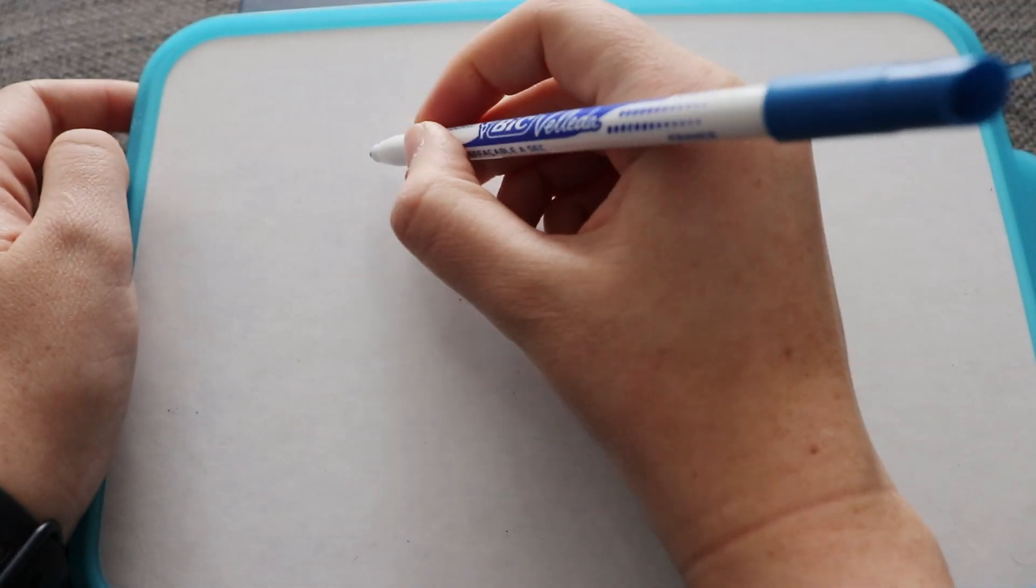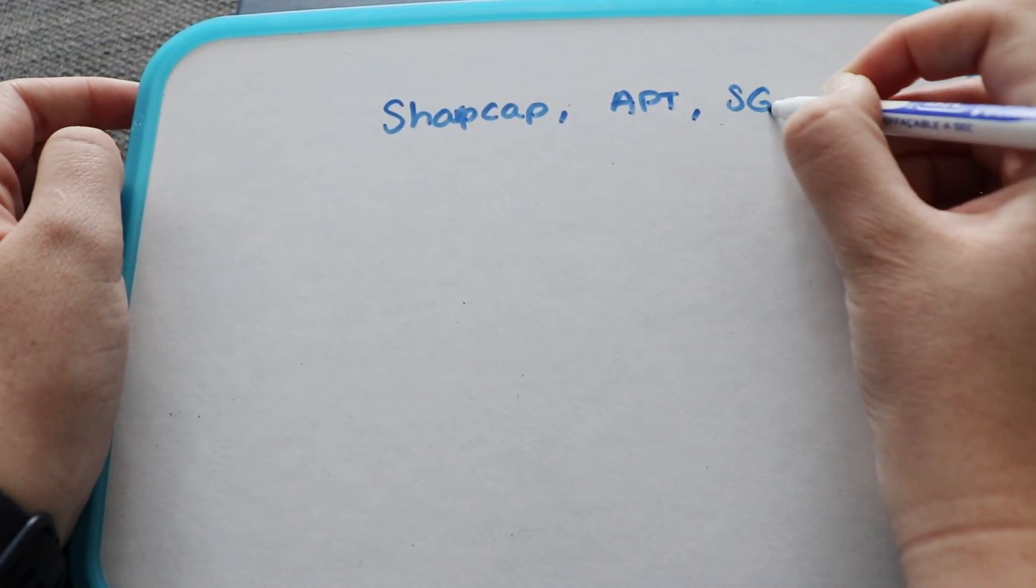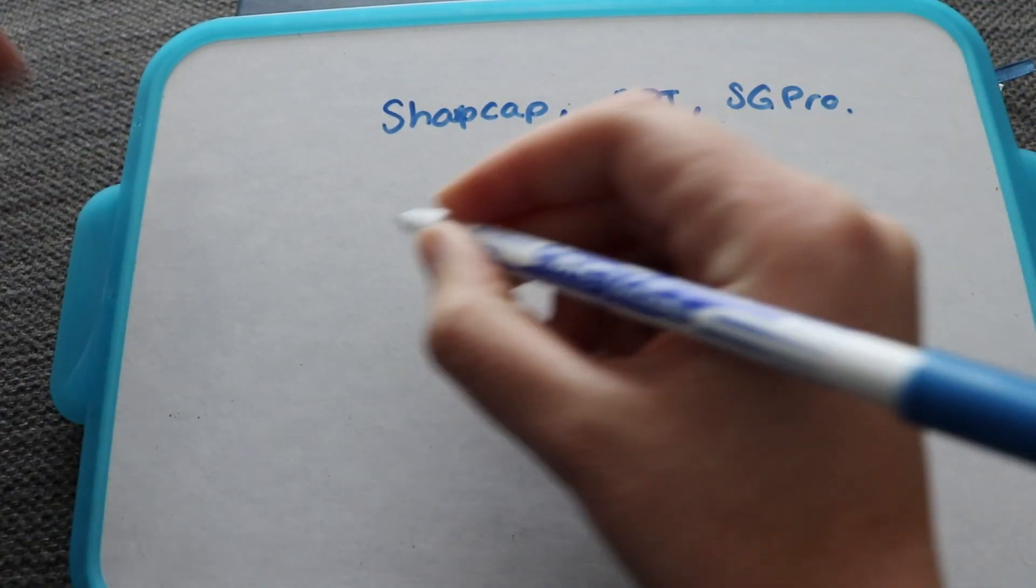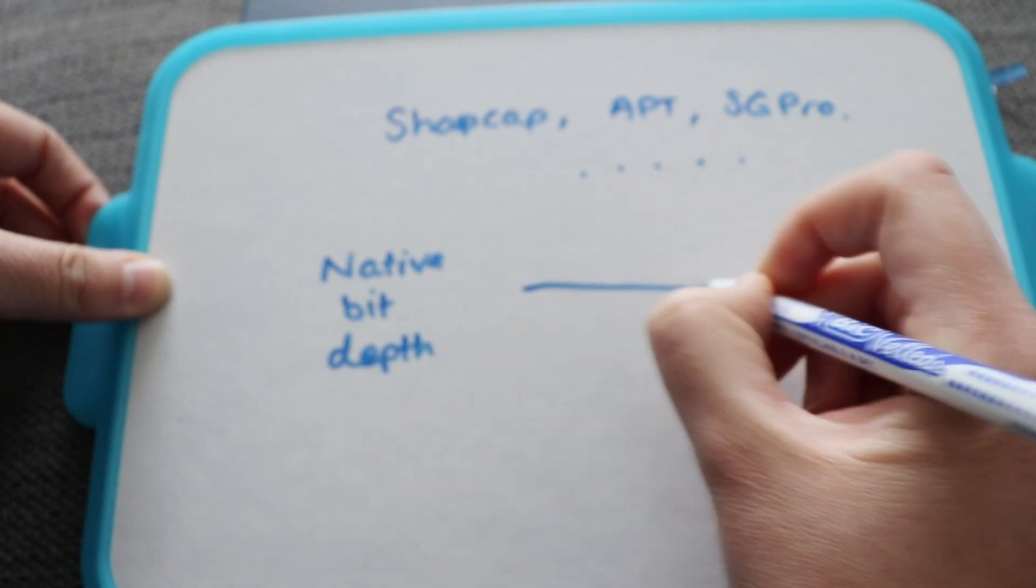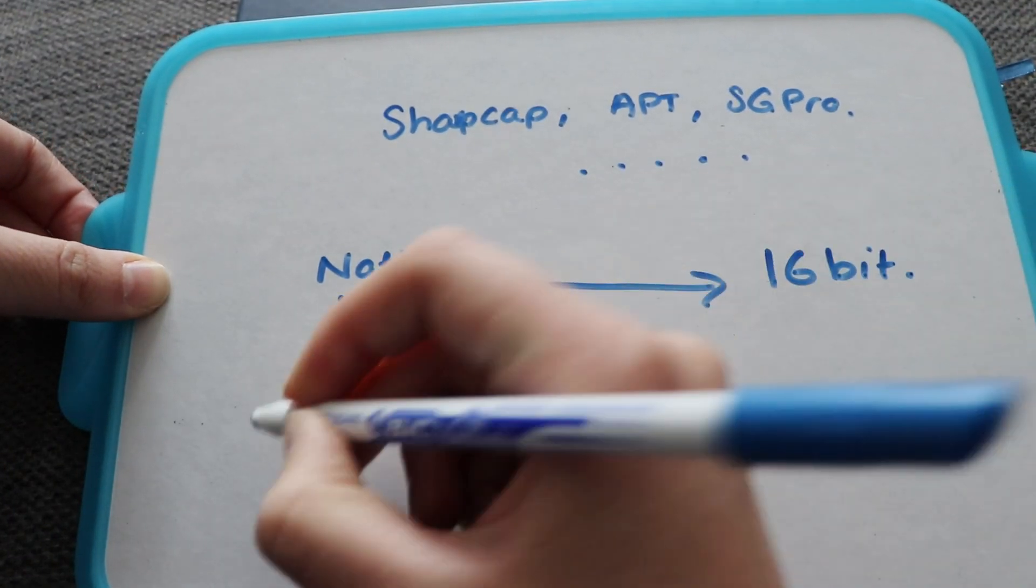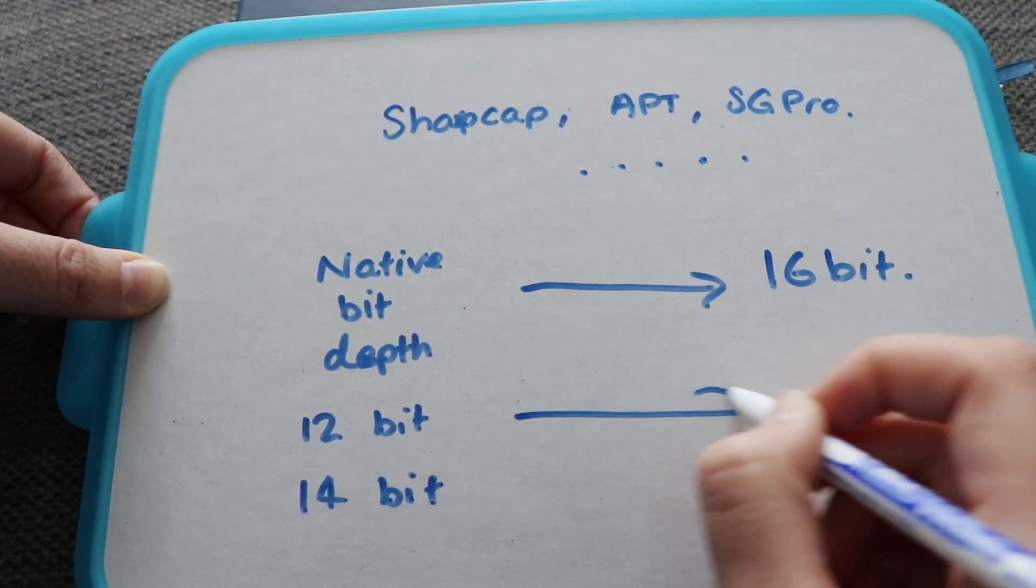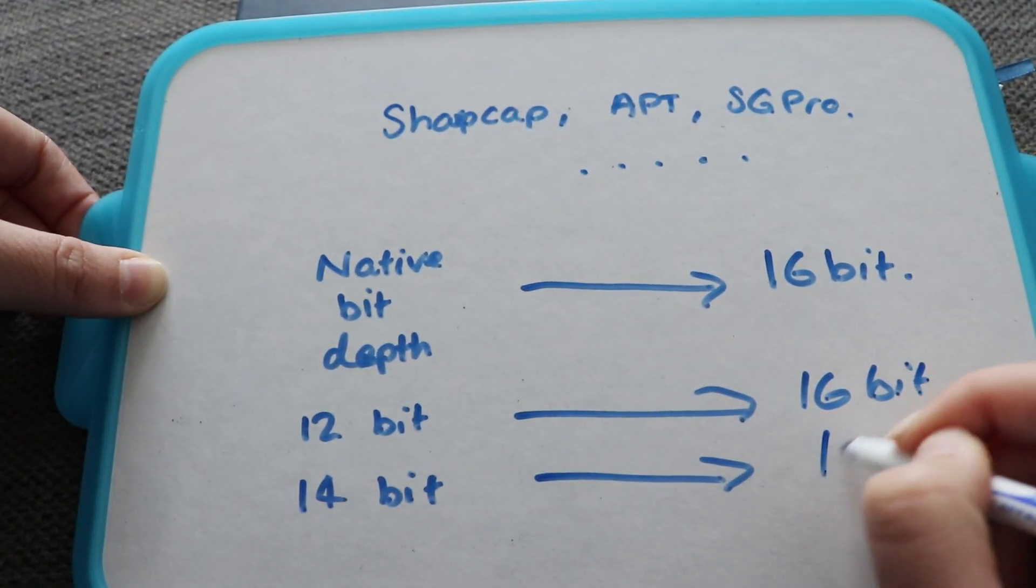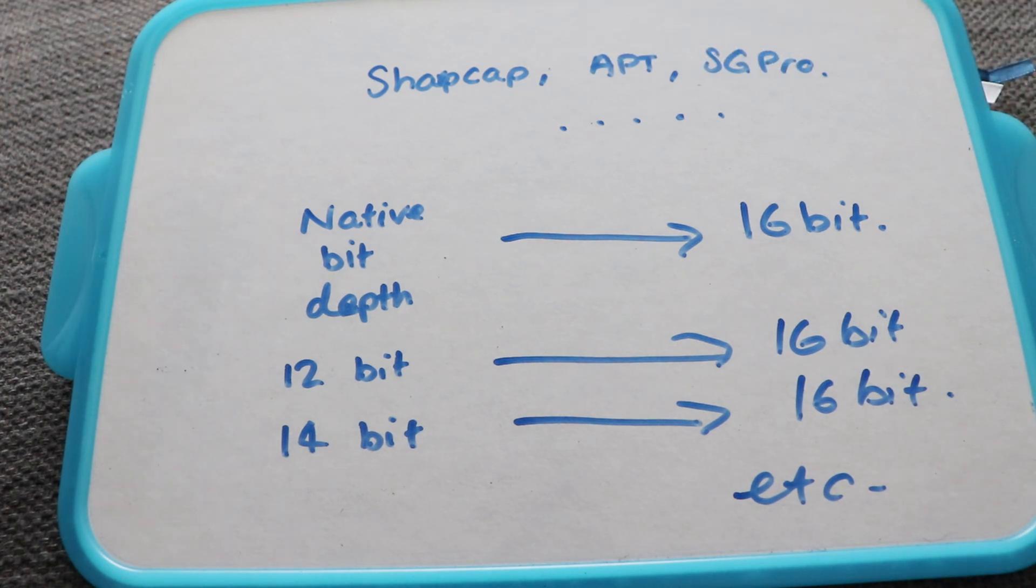So the next important piece of information before we actually get on to target ADUs is: does your program, so for example SharpCap, APT, SGPro, etc., scale from the native bit depth all the way to 16 bit? So for example 12 bit to 16, 14 bit, etc. This is important to know because depending on whether it scales to 16 bit or not, it depends on what values you're going to be shooting for.